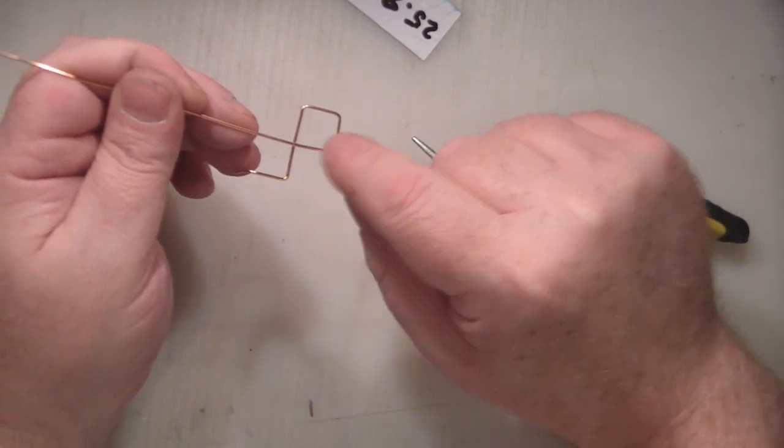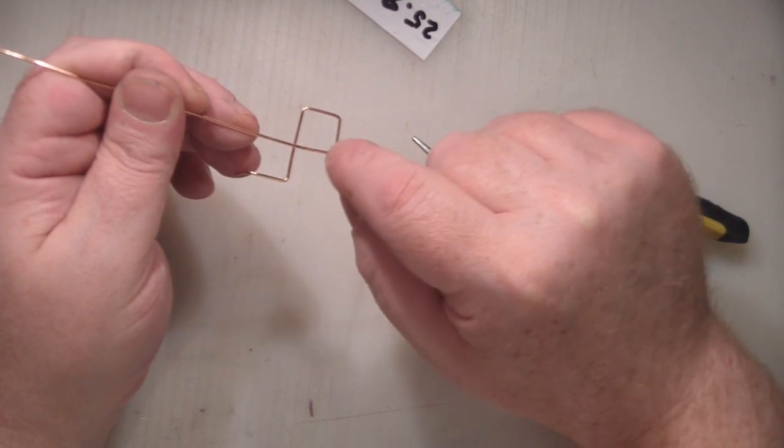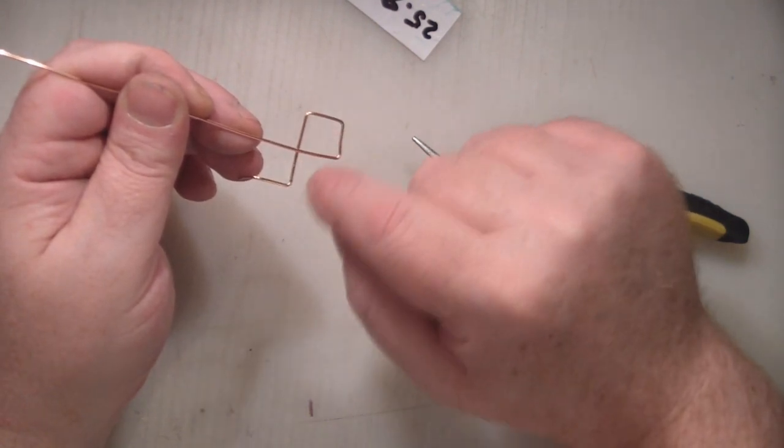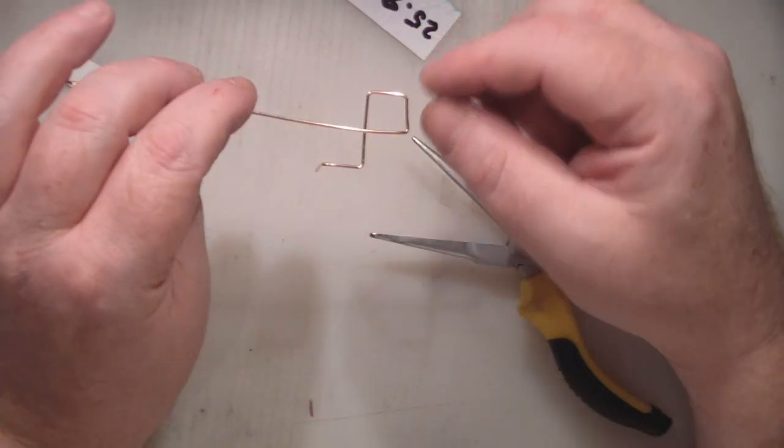Now where this is crossed over, we're going to put some heat shrink on there just so they're not touching, because that'll cancel out your actual element itself.